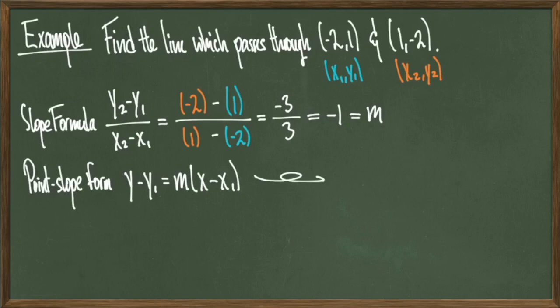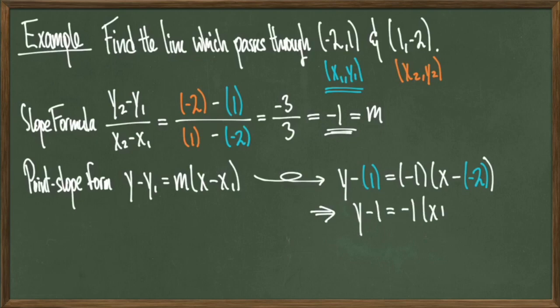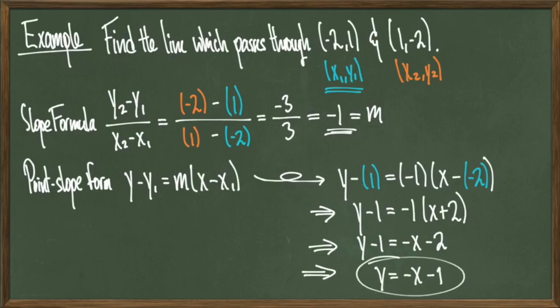As I input my information, I get y minus positive 1 equals negative 1 times the quantity x minus negative 2. All that's left to do here is simplify to solve for y, which gives me a line of y equals negative x minus 1. And I'll say again, plug in the point 1, negative 2 into point-slope form with the slope negative 1 to see that you will get the same line. But overall, that's the basic recipe for building a line that goes through two points. You first find the slope between those two points by use of the slope formula, and then you plug the information into the point-slope form by choosing one of the points that you've been given.